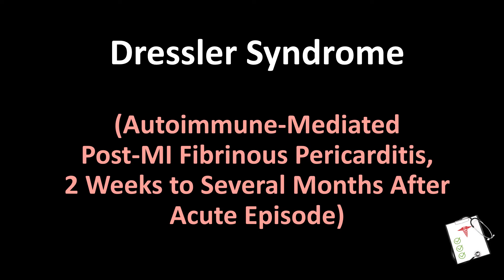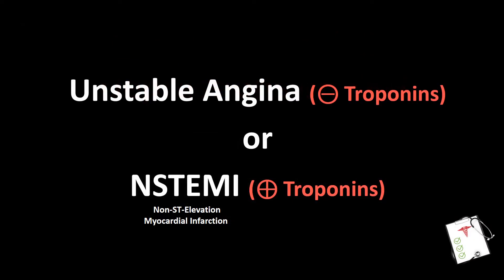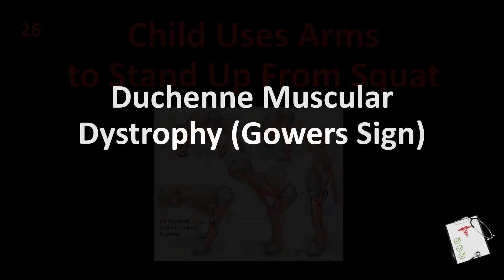Number 26: Chest pain with ST depressions on EKG. Answer: Unstable angina with negative troponins, or NSTEMI with positive troponins. Number 27: Child uses arms to stand up from squat. Answer: Duchenne muscular dystrophy — Gower's sign.